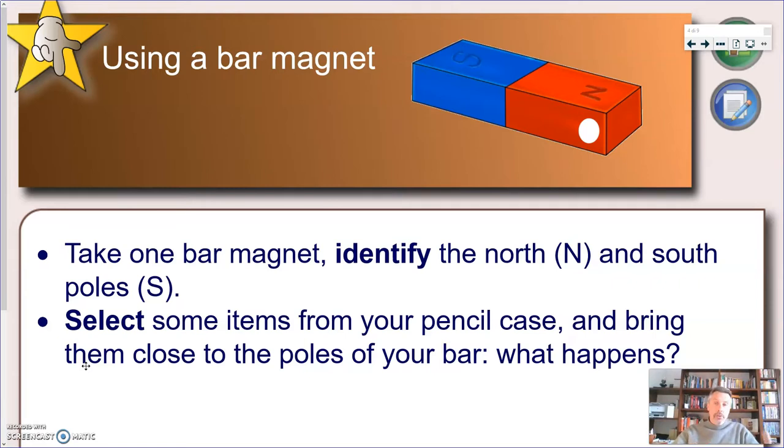We call those ends the north pole or north seeking pole and the south pole. They're usually labeled either by letters or by a color code. In this case, the north pole is marked by a white dot. So this end will be the north pole and this end will be the south pole. This shape is what we call a bar magnet. We're going to see also today other shapes of magnets.